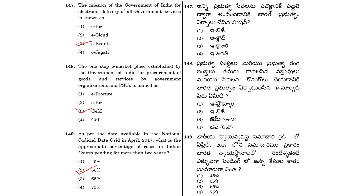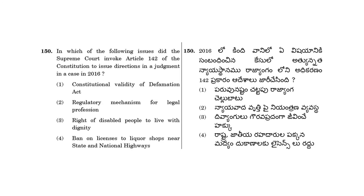The last question is 150: In which of the following issues did the Supreme Court invoke Article 142 of the Constitution to issue directions in a judgment in 2016? The answer is the ban on licenses to liquor shops near state and national highways. So 150, the answer is option 4.